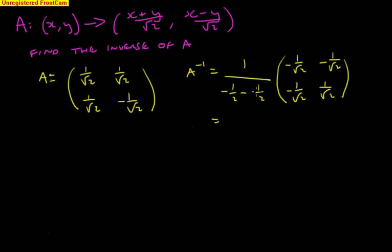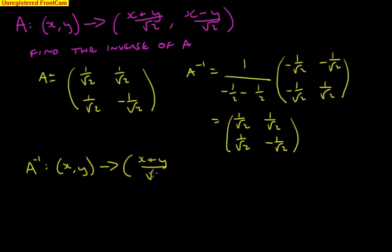This is all negative 1, so we end up with what we had in the first place. So as an inverse, just writing it out, we've got A inverse. Take X, Y, it's just the same as we had in the first place. X plus Y over root 2.